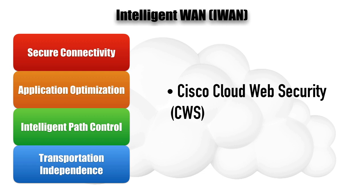That CWS data center scans the data, looking for anything that might be suspect. It checks that the traffic doesn't appear threatening, and then transmits it on to its destination. So we can have this external Cisco CWS service scan our outgoing data for us.